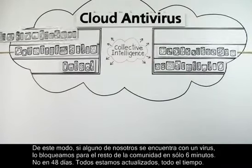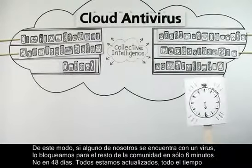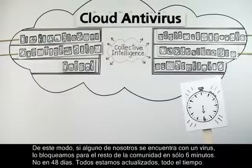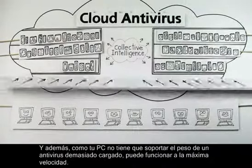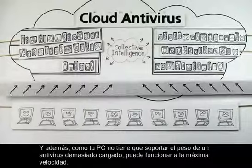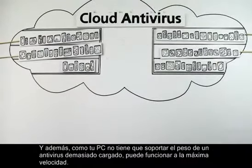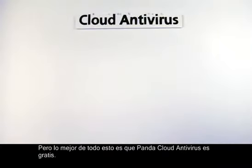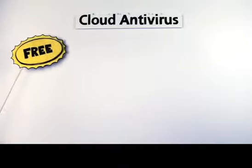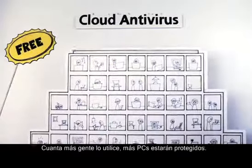So if one of us makes contact with a virus, we block it from the rest of the community in as fast as six minutes — not 48 days. We're all up to date all the time. And because your PC is no longer weighed down by clunky antivirus software, it can compute at its highest speed. But the very best thing about Panda Cloud Antivirus is that it's free, because the more people use it, the more computers there are keeping everyone safe.